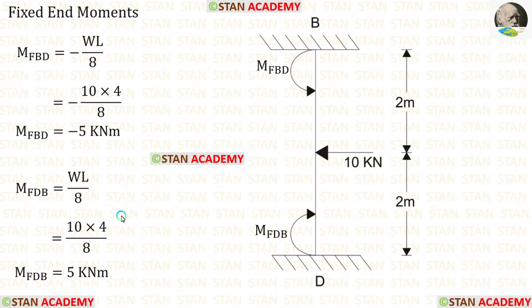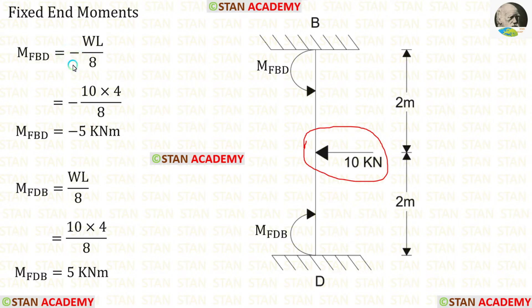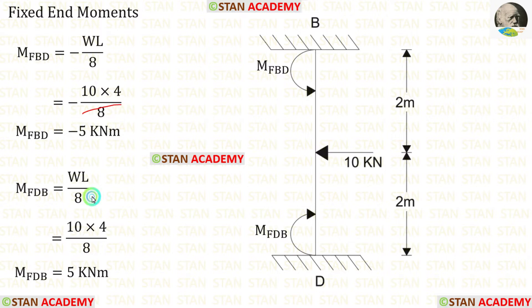Now let us find the fixed end moments in column BD. Here, there is a point load of 10 kN acting at the center. The formulas to find the fixed end moments are −WL/8 and +WL/8. Applying the values, we obtain MBD and MDB.